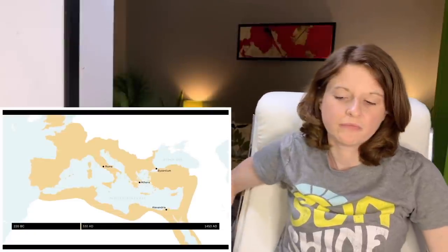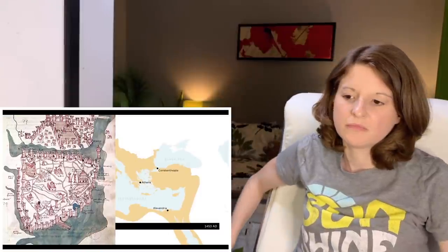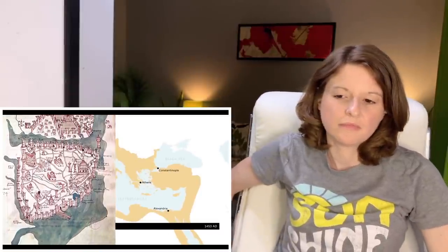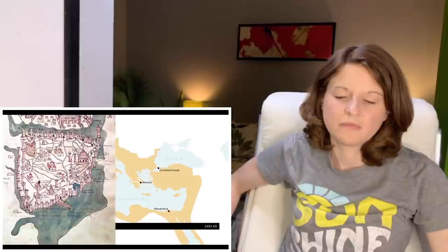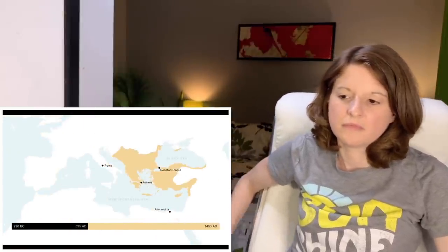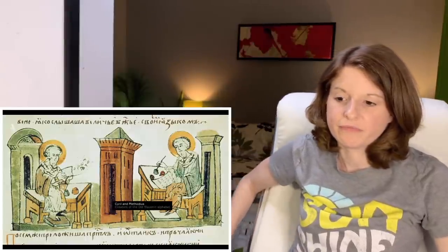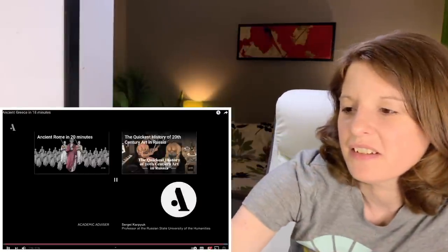In 330, Emperor Constantine built a new city on the site of the old Greek colony of Byzantium — Constantinople. This was the starting point for the history of the Byzantine Empire, which extended the life of Greek culture another thousand years, leaving us the weird Russian alphabet, for instance. Really? That last little tidbit — I had no idea about that. I didn't know that the Russian alphabet kind of stemmed from the Greek alphabet.